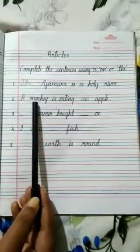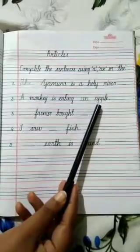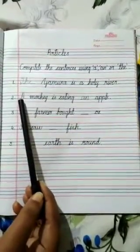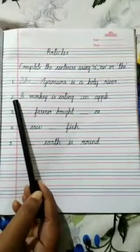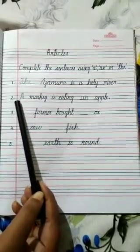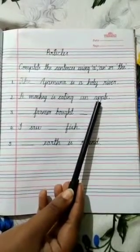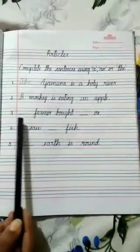Second one: Dash Monkey is eating an apple. Since M is a consonant, so we write A in front of monkey. Since A is a vowel, so we write AN in front of apple. In the same way, complete the rest for your homework children. Thank you.